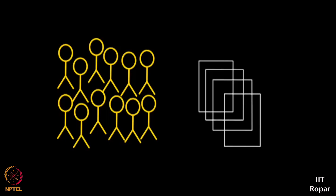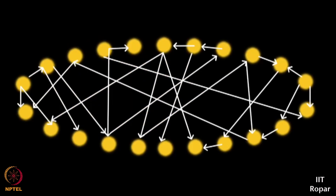Now we create what is called the impression network — who likes whom. It looks like this on 20 notes. This impression is more like voting: I like him, I like her. Based on this, can we pick a leader amongst these 20 people?